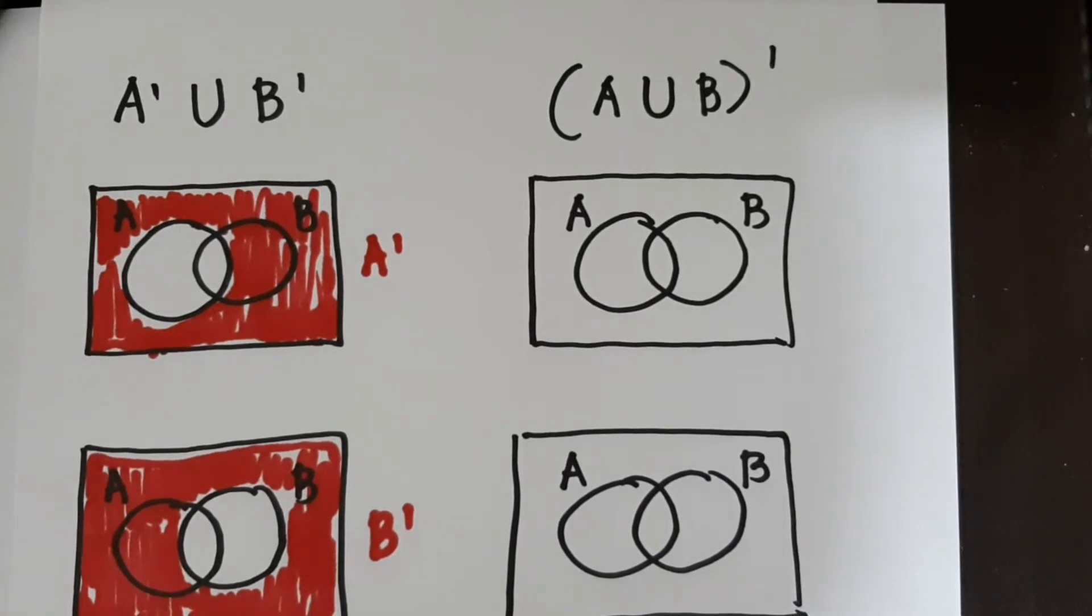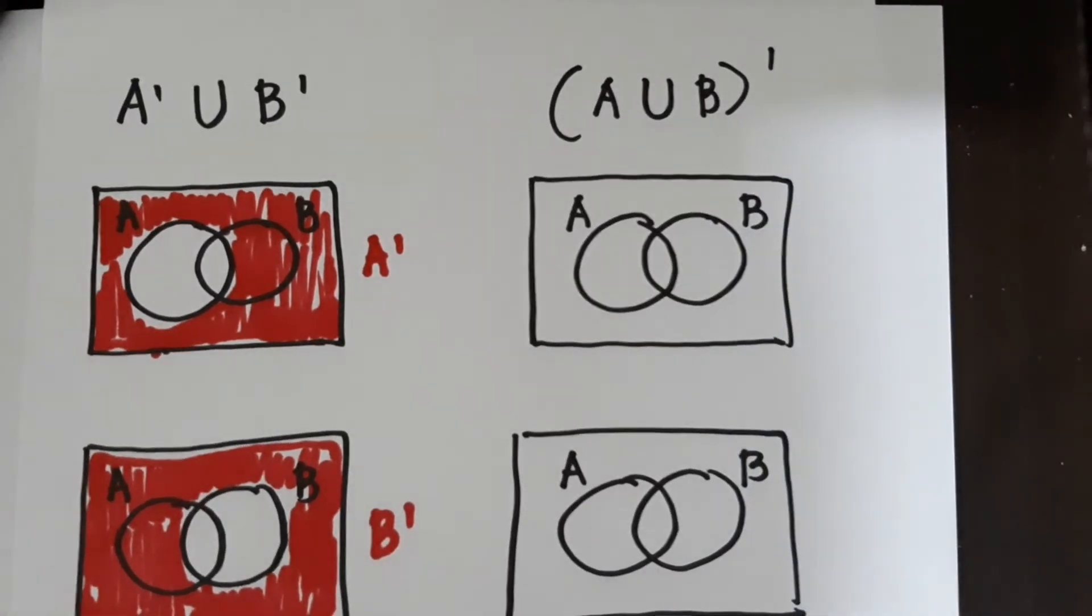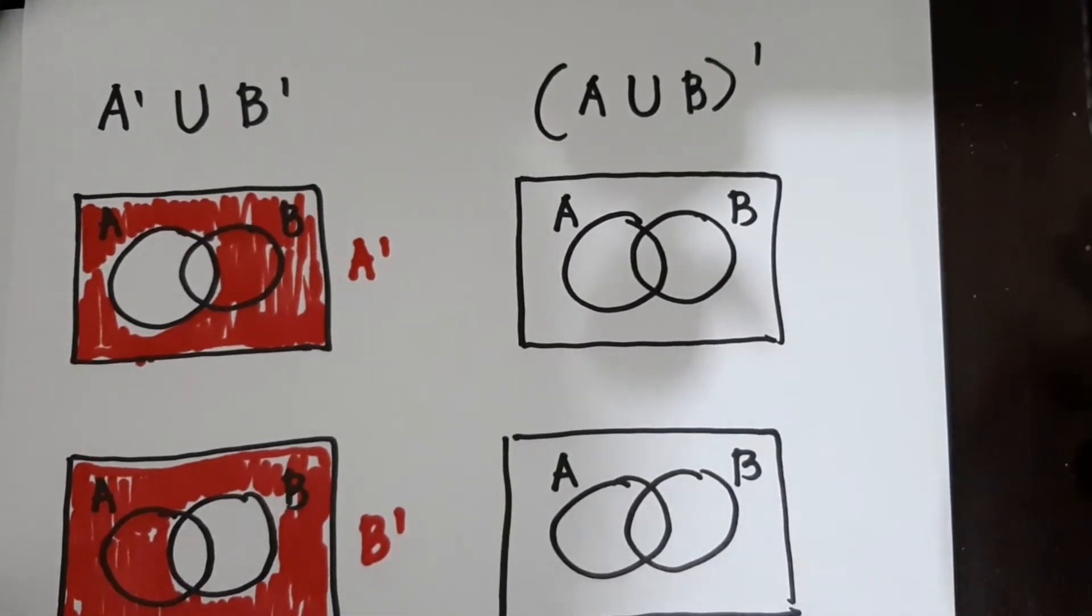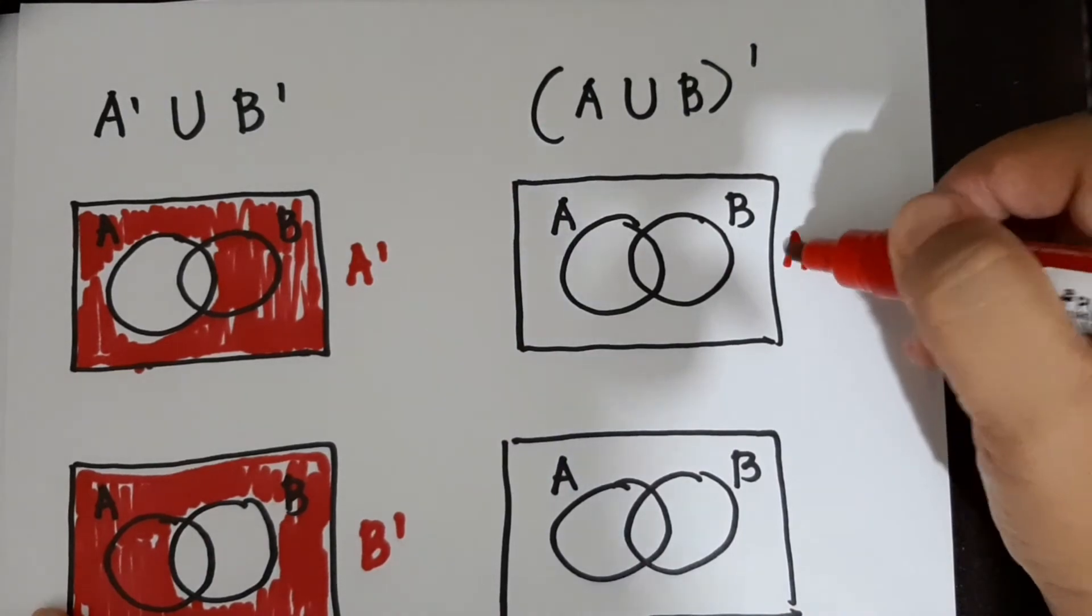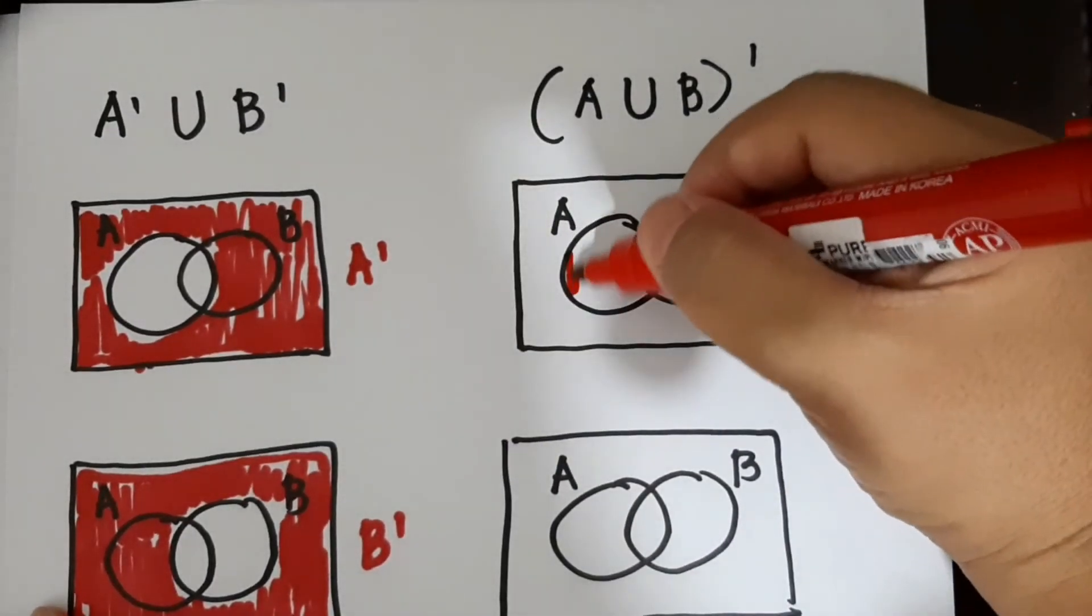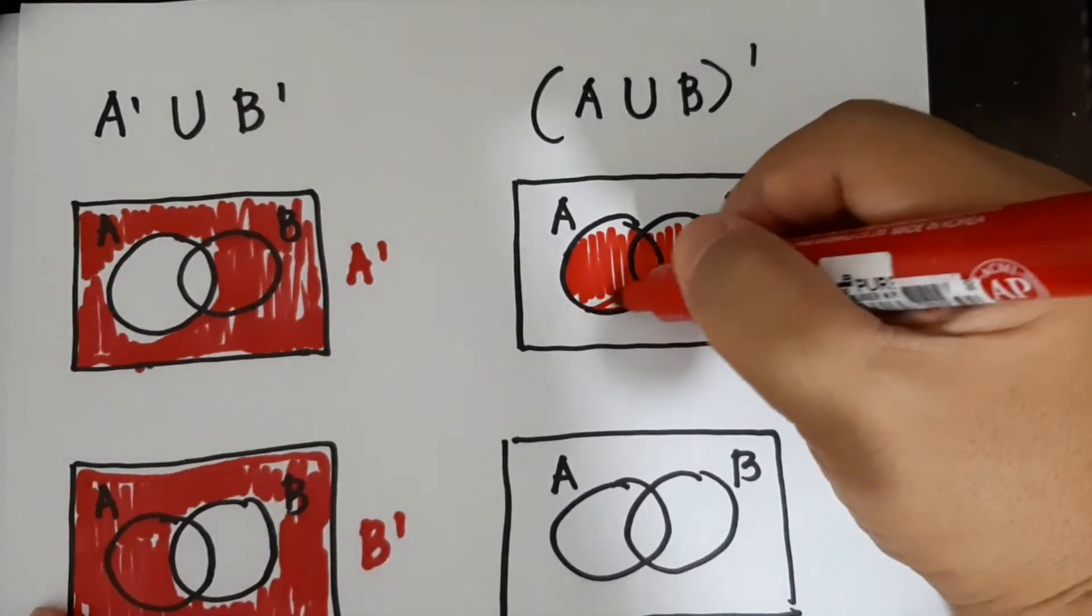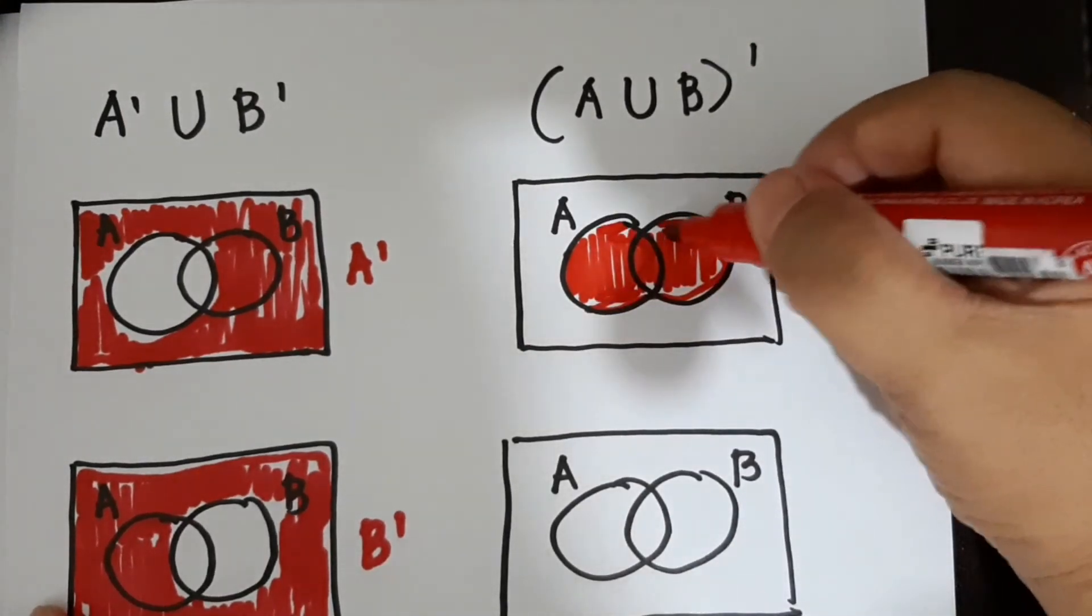So that would be the union of sets A and B or not A union B. So that would be A union B or not A union B. So ang gagawin natin, kukunin muna natin yung A union B. So alam natin na lahat yun may shade.